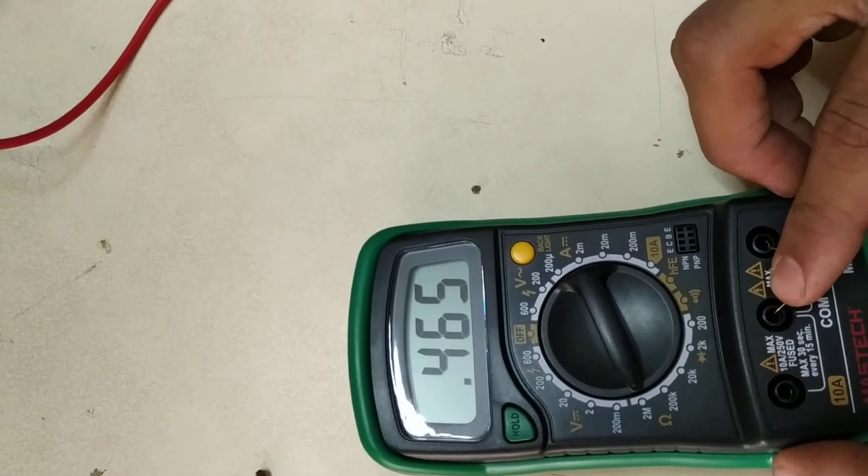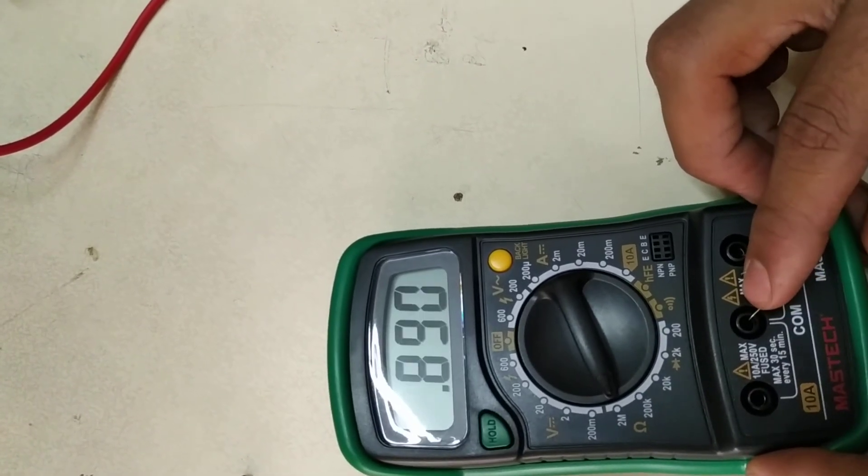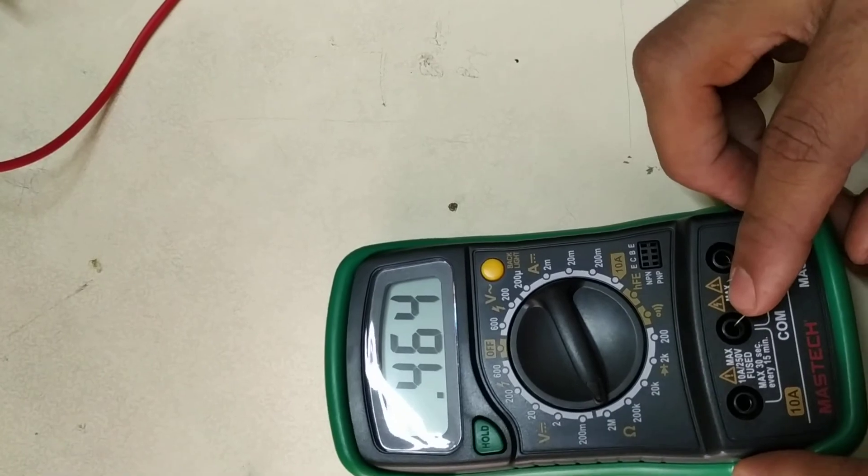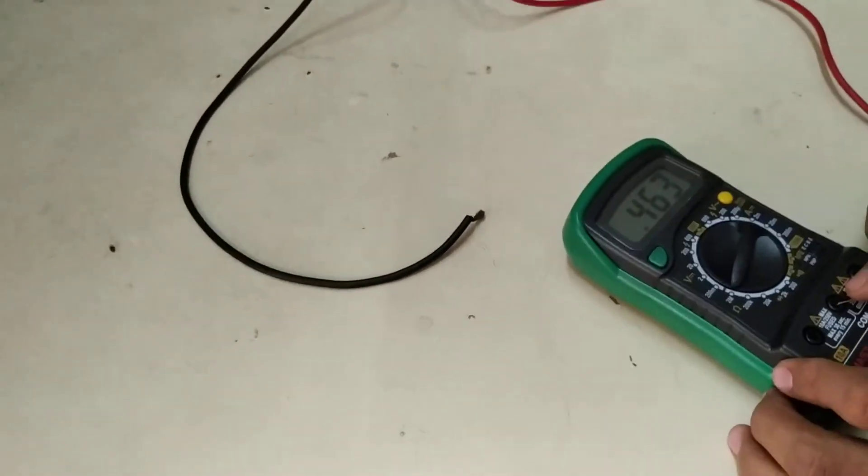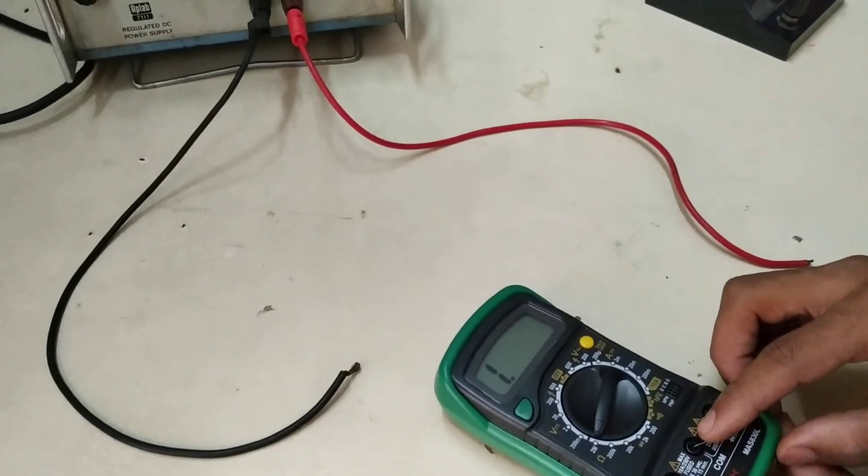464 kOhm or 465 kOhm, whatever we can take. 464 kOhm is the measured value. You can calculate the accuracy. Thank you.